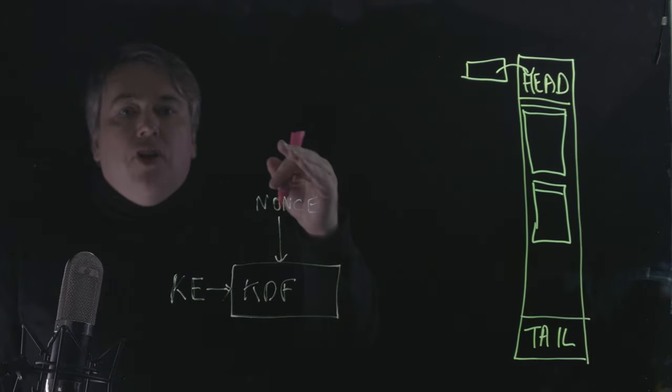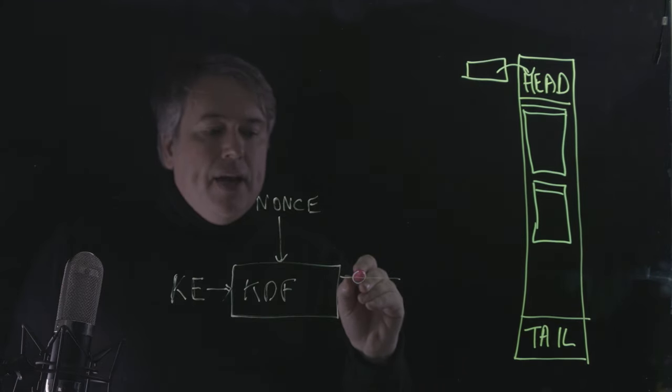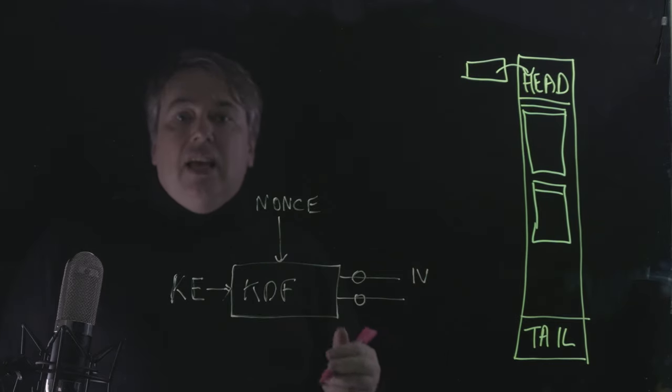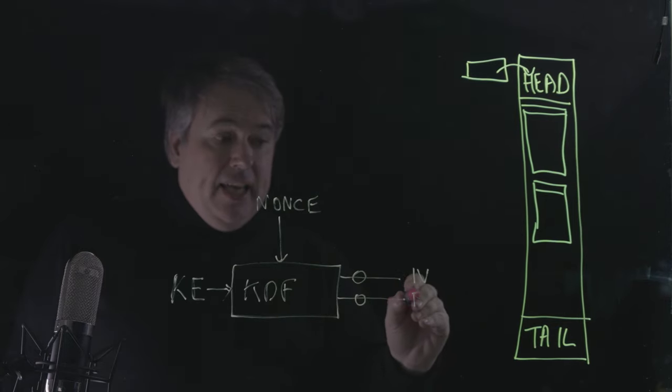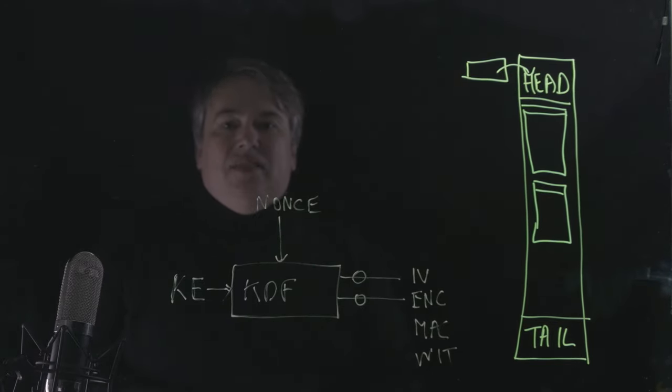So we have a nonce here, a key exchange, and then we add in a different mix in to get out our initialization vector if we're using a block cipher, our encryption key of course, and our message authentication code, and also a witness value.